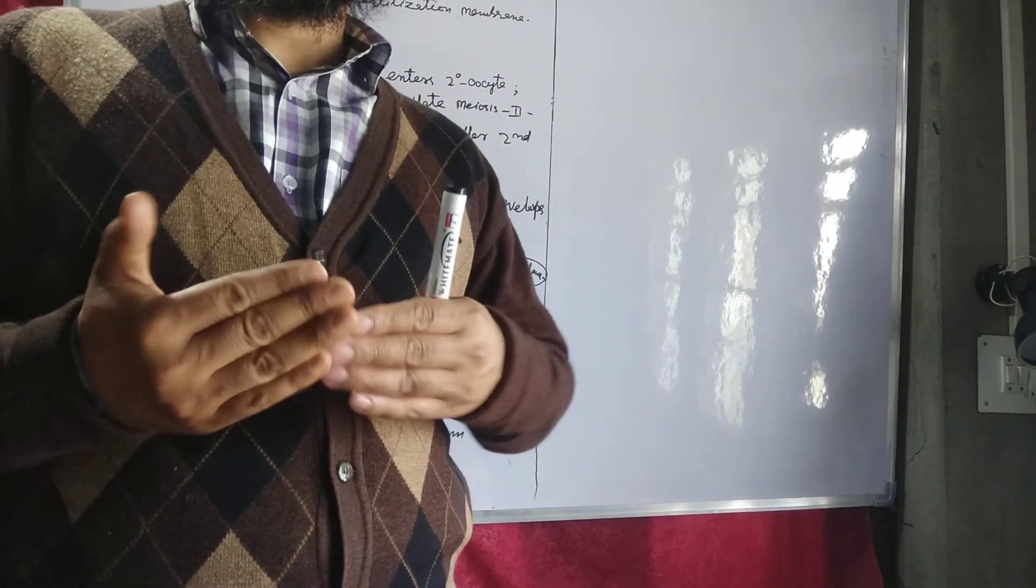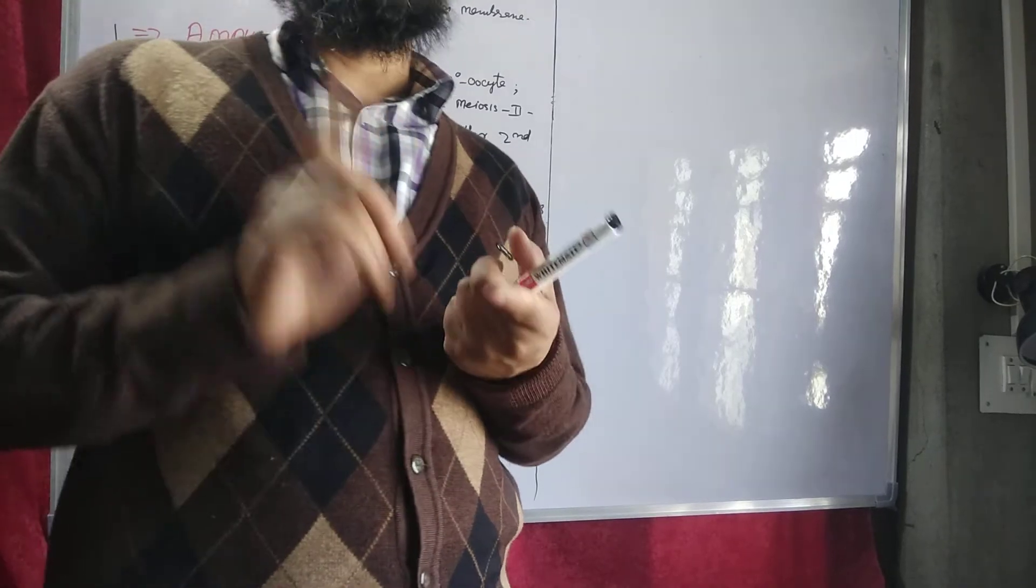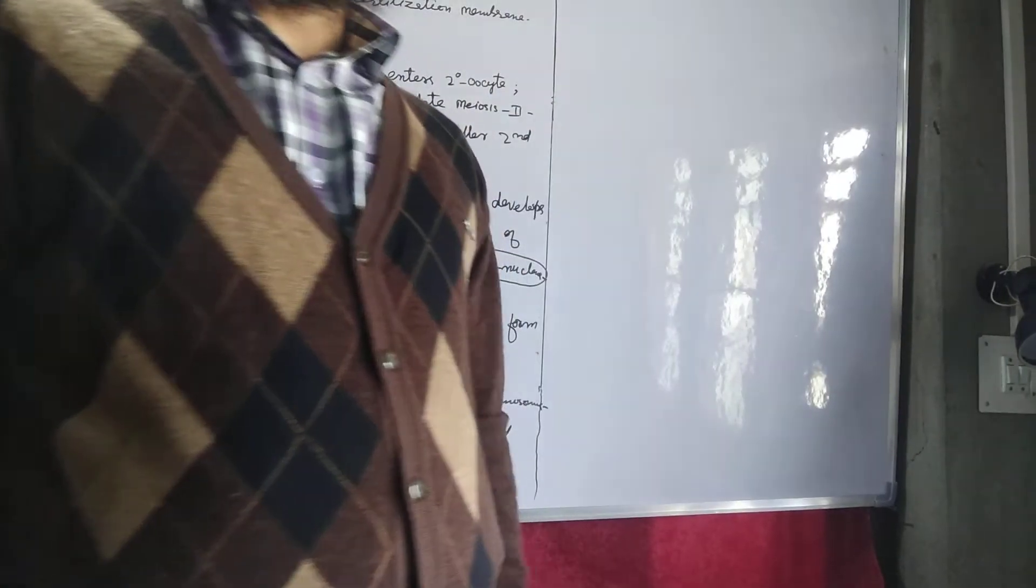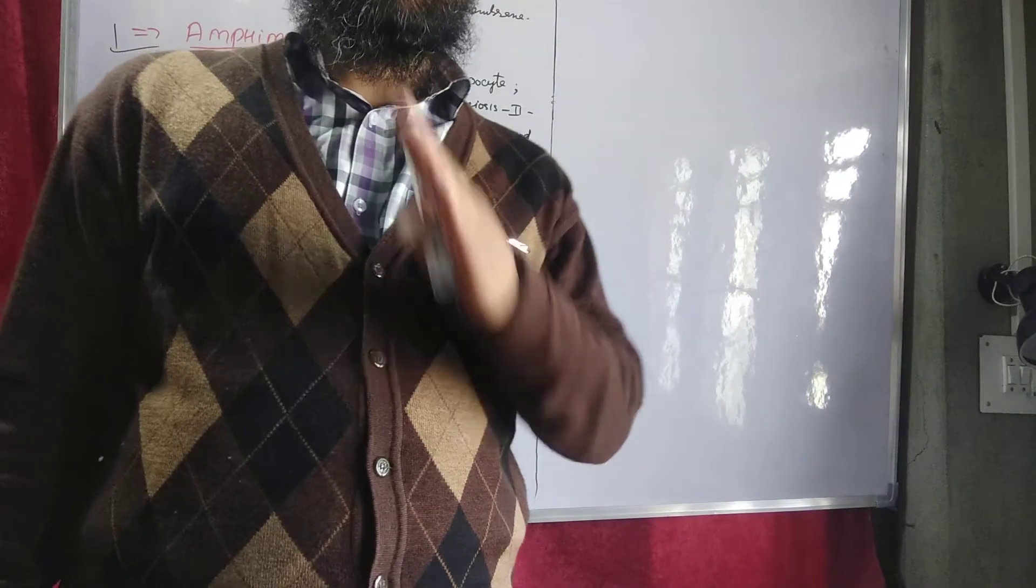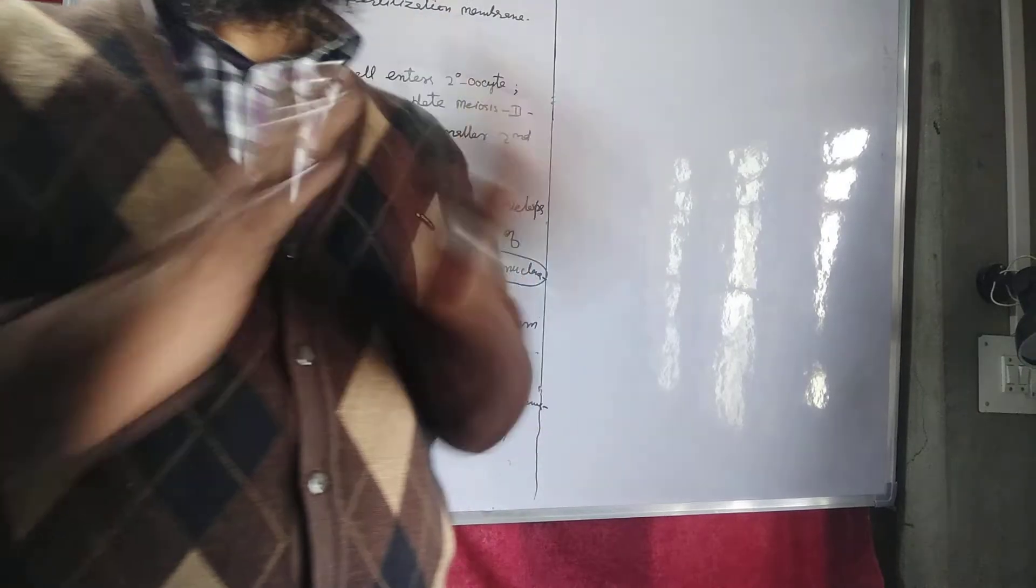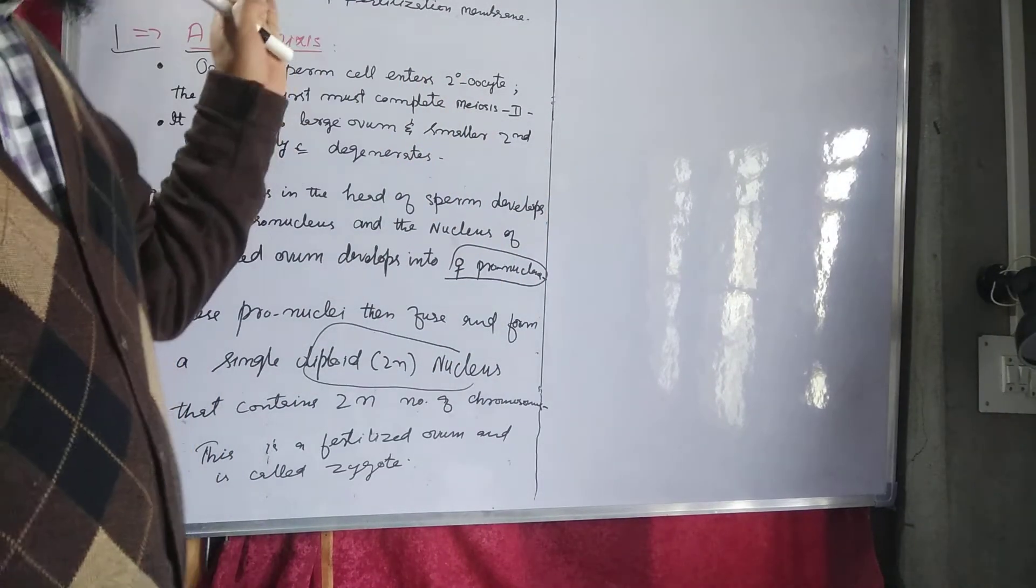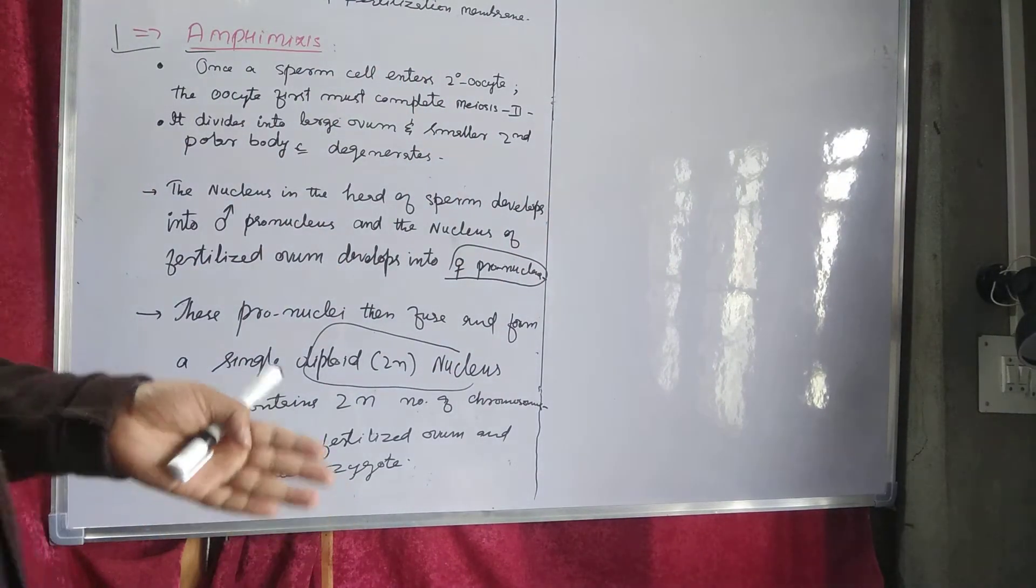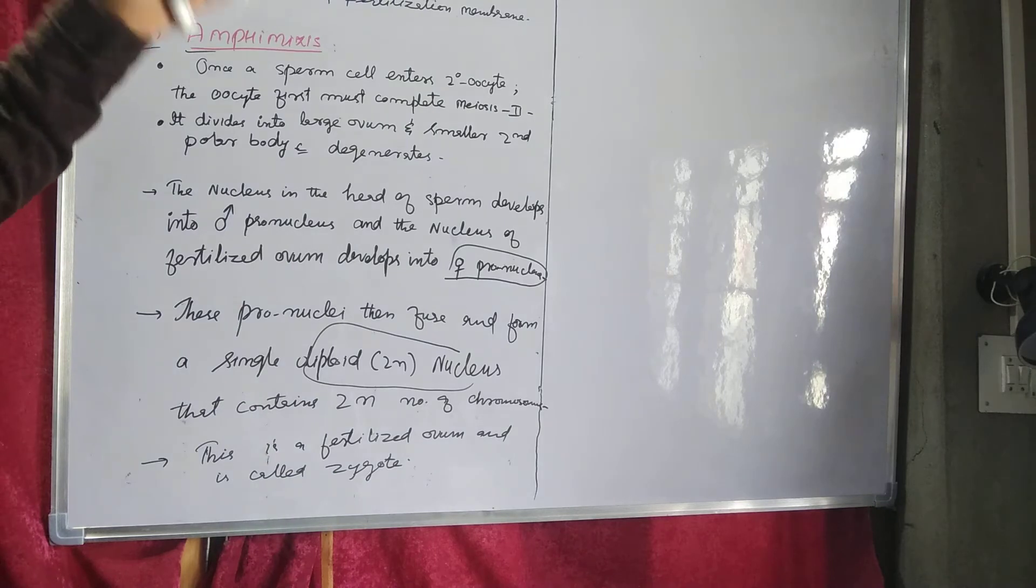We have told what polyspermia is. Polyspermia means the entry of more than one sperm into the secondary oocyte. But this must not happen. It will disturb the chromosome number. So how do we prevent this?